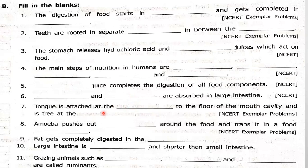Next question: amoeba pushes out DASH around the food and traps it in a food DASH. Amoeba pushes out false feet which are called pseudopodia — be careful about the spelling: P-S-E-U-D-O-P-O-D-I-A — around the food and traps it in a food vacuole — spelling: V-A-C-U-O-L-E.